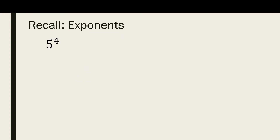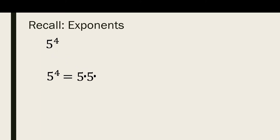For the next item, our base is 5 and our exponent is 4. We will multiply 5 by itself 4 times: 5 times 5 times 5 times 5, and the answer is 625.